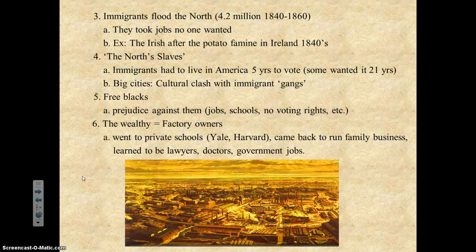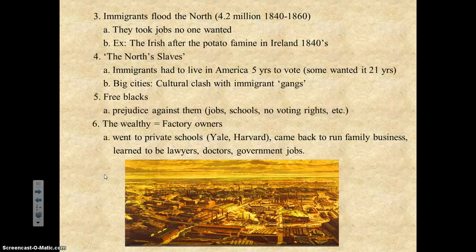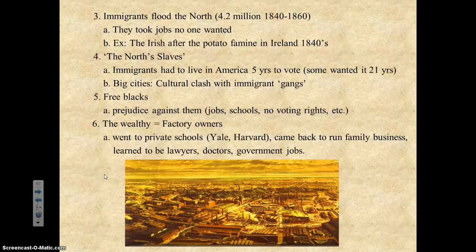Free blacks in the North faced lots of prejudice and racism — separate jobs, separate schools, and no right to vote. Then you had the wealthy factory owners, the chosen people of the North. They sent their kids to private schools, to Yale or Harvard, to learn how to run the business. When mom and dad passed away, you got the family factory, a great house — you'd become lawyers, doctors, and hold government jobs.